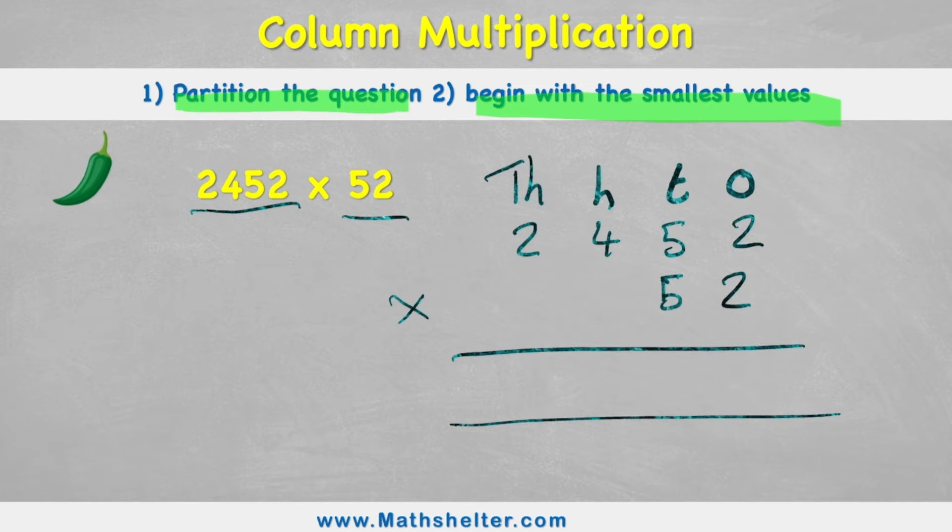Now where do I begin? Well, it said begin with my smallest values. The smallest number is 52, and the smallest value in my 52 is in the ones column, being this 2. So this 2 is where I'm going to start, and I'm going to multiply it by the smallest value of the other number, which is this 2. So 2 times 2 is 4. Put that in the ones column.